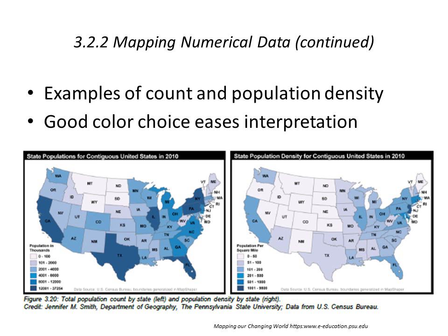Here are some other examples of choropleth mapping — count and population density. Both are good choices for interpretation as single-hue or monochromatic color scale maps.